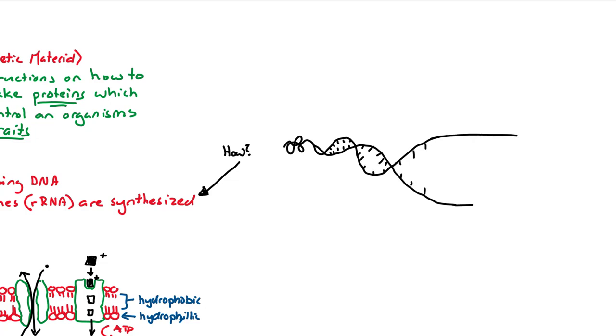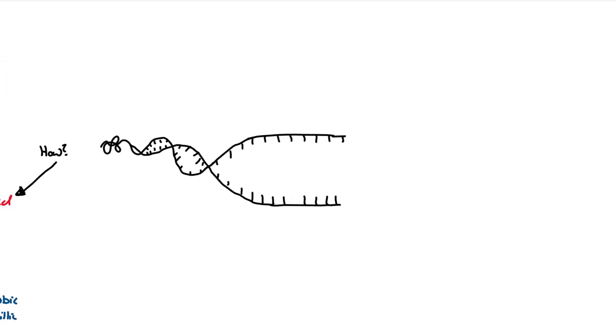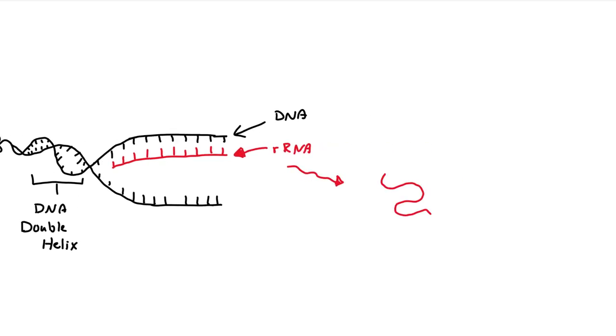The DNA will split open, as shown here. And the instructions in the DNA will allow this new little red strand, the rRNA strand, right here, to be drawn, or to be made. The rRNA will break away, and it will start to fold on itself. And it will fold eventually into a little ball known as a ribosome.